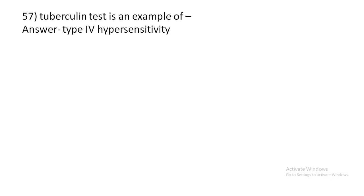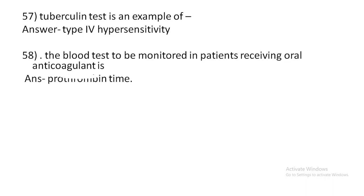Tuberculin test is an example of type 4 hypersensitivity. The blood test to be monitored in patients receiving oral anticoagulant is prothrombin time.